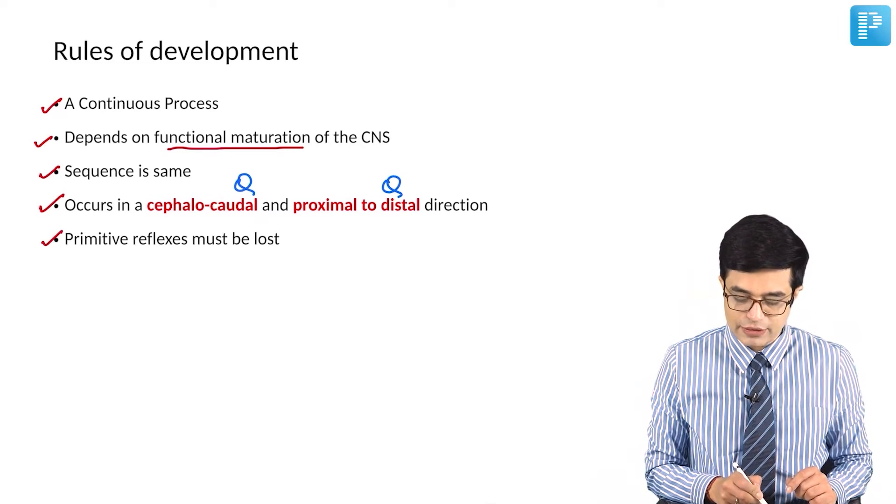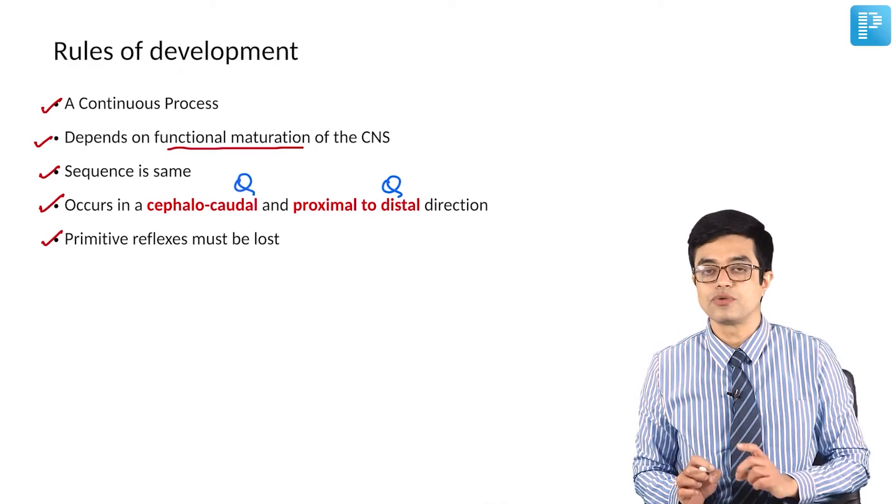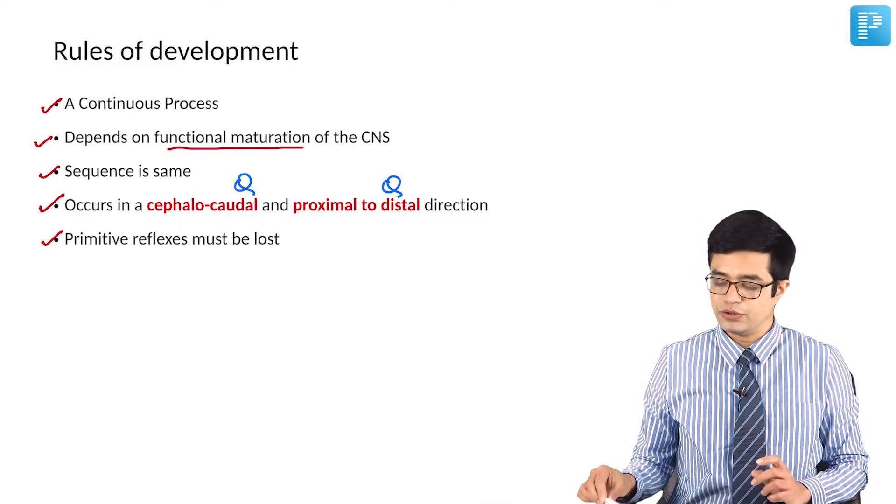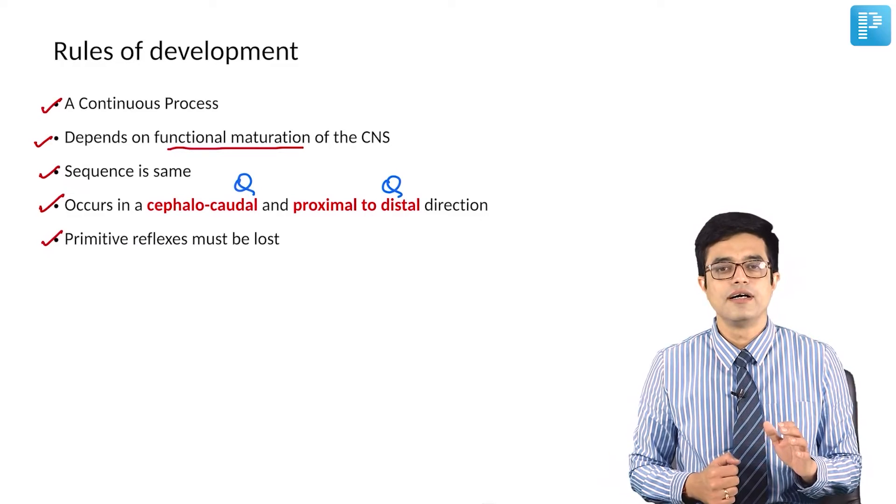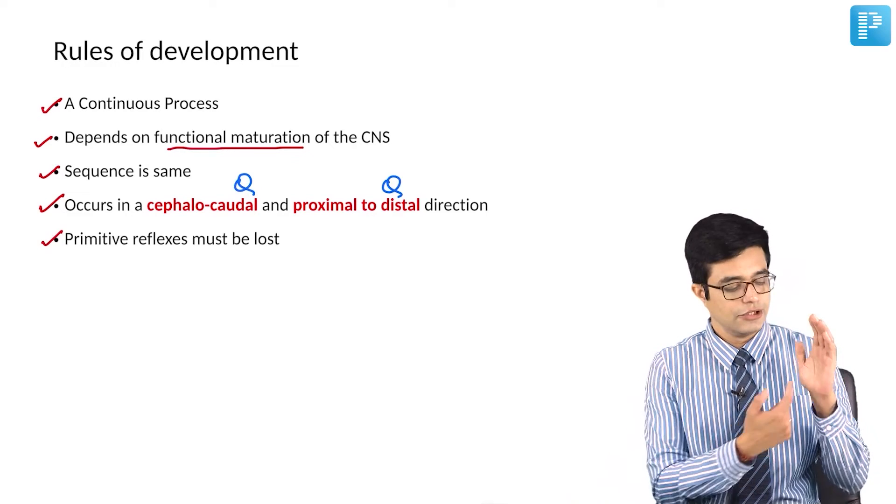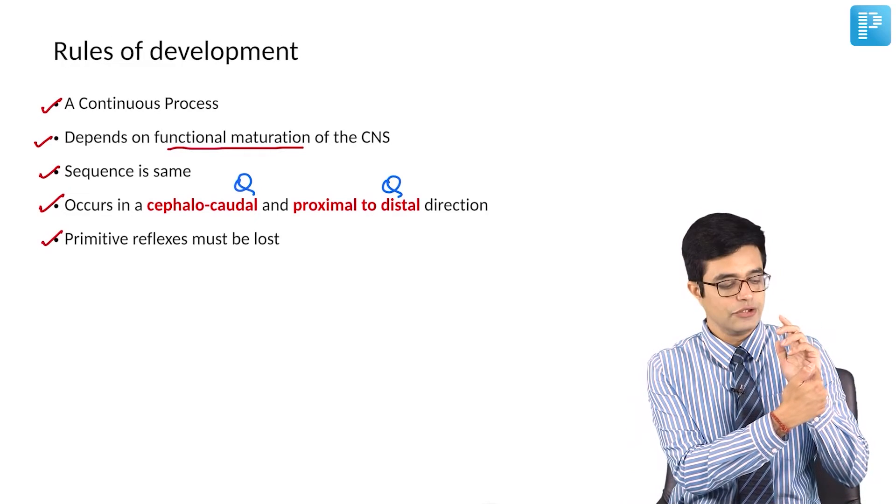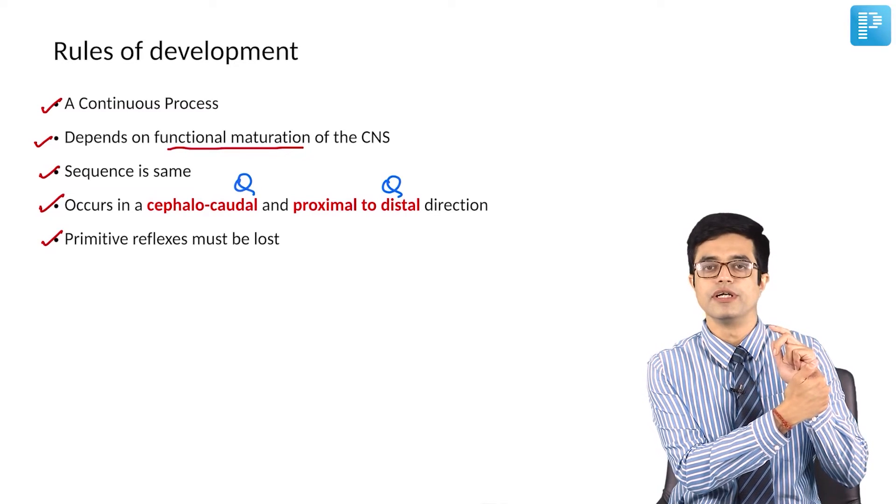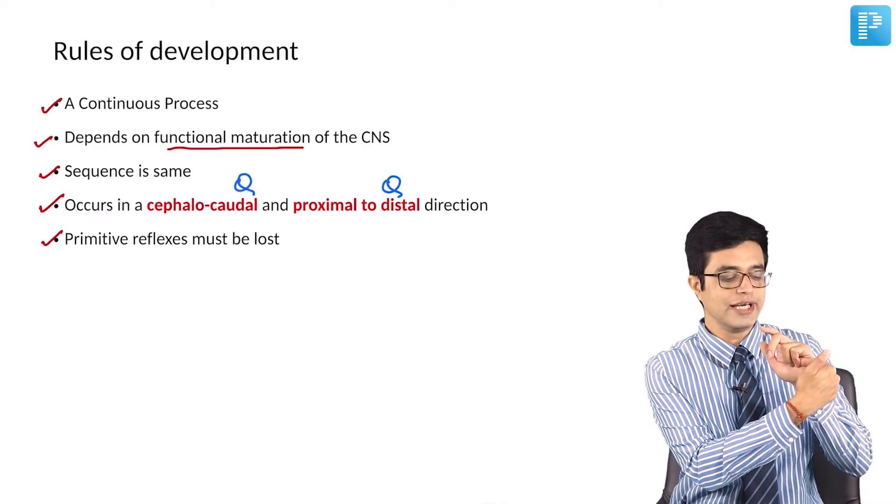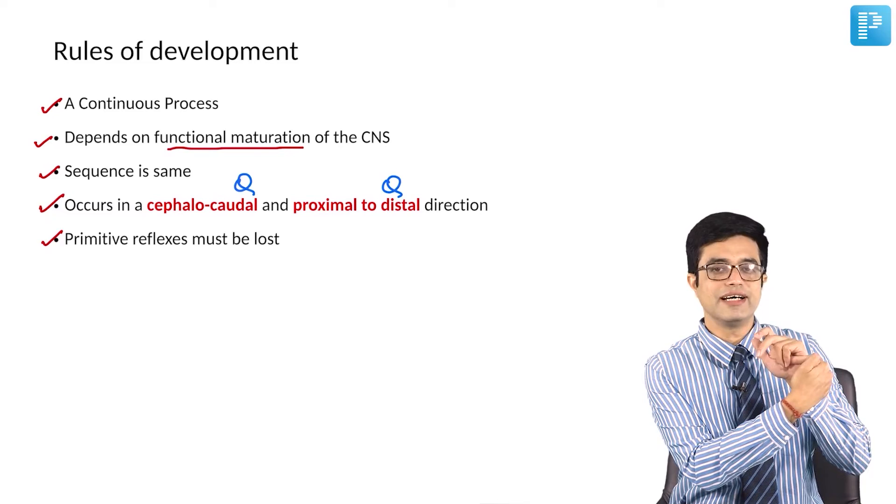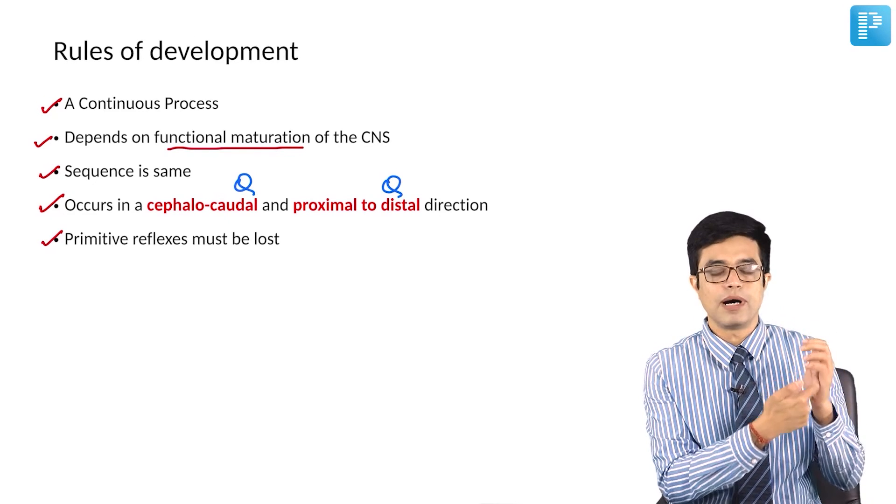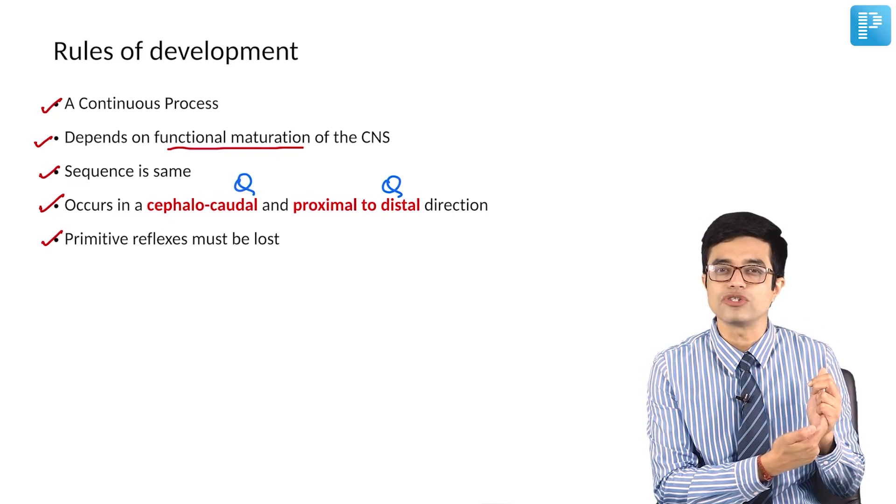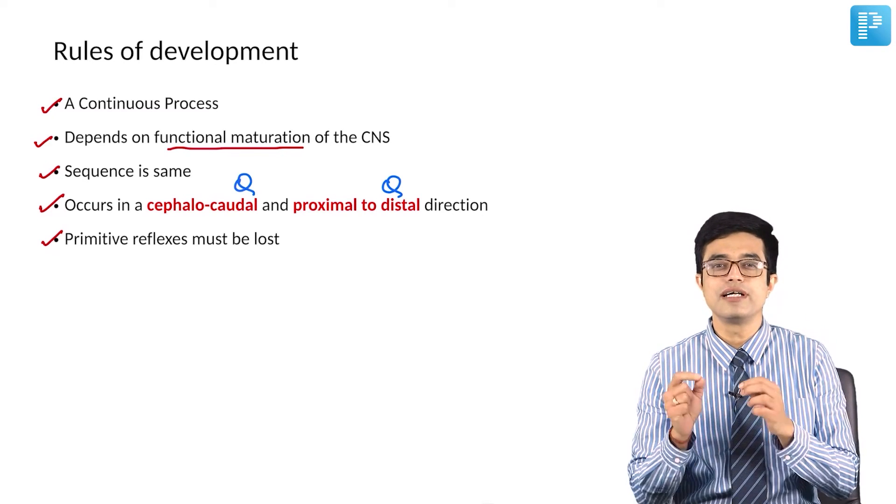Next, primitive reflexes must be lost for new reflexes to come. Primitive reflexes, you know that newborns, I will give an example: newborns are having palmar grasp reflex. You stroke something and the newborn folds his fingers to hold it. The holding is more prominent on the ulnar side. It is called as ulnar palmar grasp reflex. Palmar grasp reflexes must be lost before voluntary grasp comes.